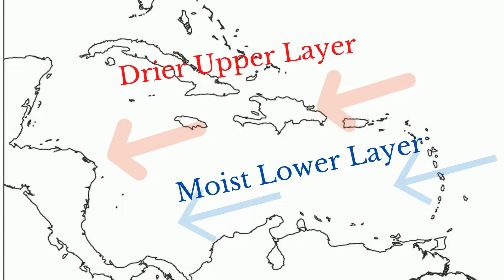The trade winds are characterized by a lower moist layer and an upper dry layer.